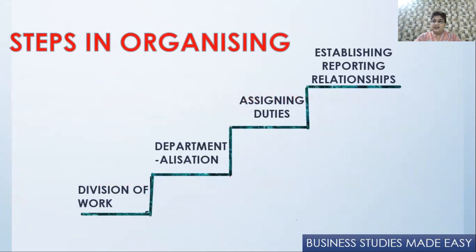Now let's look at the steps in organizing. There are four steps — this is one of the smallest processes we have: division of work, departmentalization, assignment of duties, and establishing reporting relationships. Let's do them one by one.